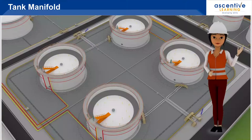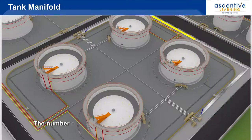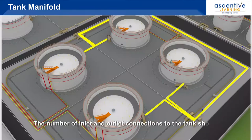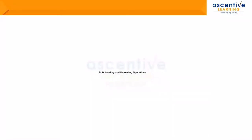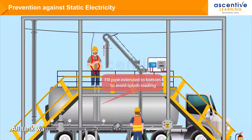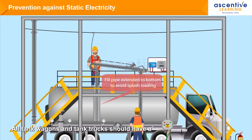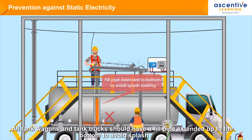Main features of tank manifolds are: the number of inlet and outlet connections to the tank should be kept to the minimum required. All tank wagons and tank trucks should have a fill pipe extended up to the bottom to avoid splash filling.